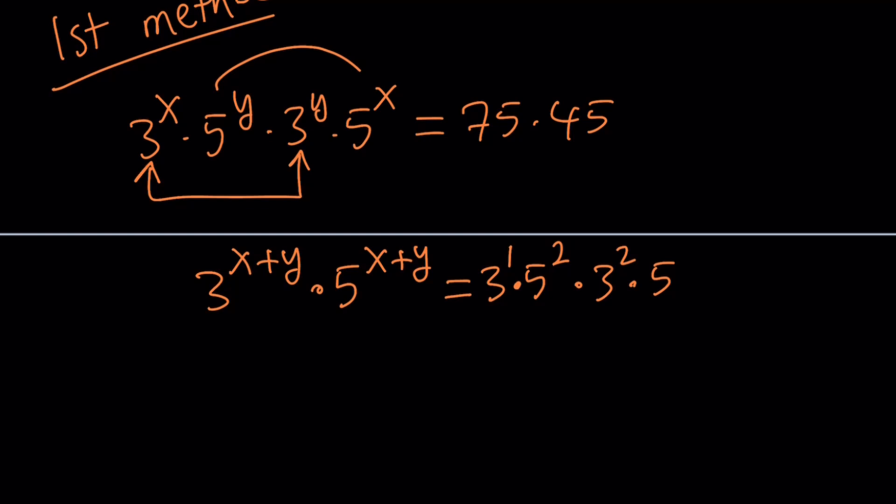On the left hand side, notice that the exponents are the same. We have a rule that says whenever you have a to the n times b to the n, you can combine them by multiplying the bases and using the same exponent.